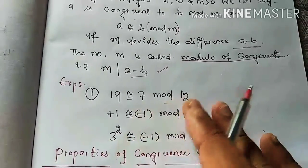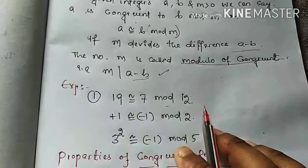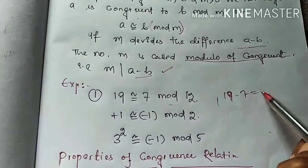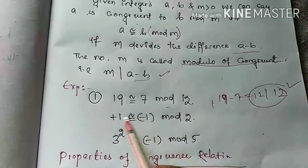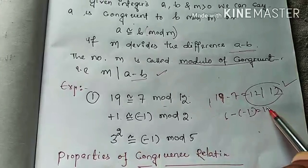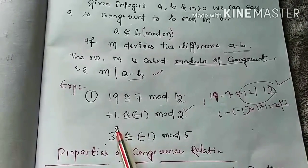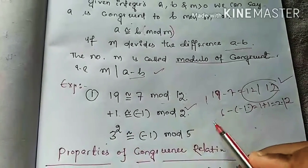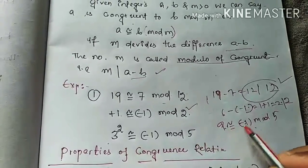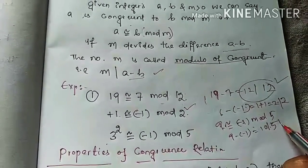Let's understand this with simple examples. Here, 19 is congruent to 7 modulo 12 because 19 minus 7 is equal to 12, and 12 divides 12. Also, 1 is congruent to minus 1 modulo 2 because the difference 1 minus (minus 1) is 2, and 2 divides 2. And 3 squared, which is 9, is congruent to minus 1 mod 5 because 9 minus (minus 1) is 10, which is divisible by 5.